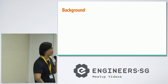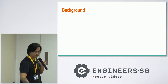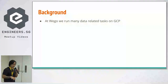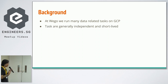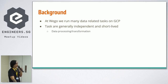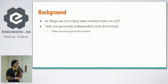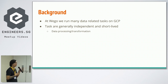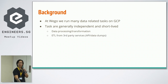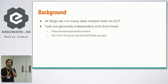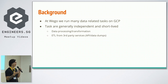Some of the background on why we decided to move away from Cron. We run a lot of data-related tasks on GCP. All these tasks are generally independent — they don't rely on each other for code or to run in sequence. A lot of things include data transformation and processing. We have a lot of data coming in, and the data team focuses on making business-related analysis based on this data. We also do things like ETL from third-party services, sometimes pinging different APIs, sometimes receiving data dumps through S3.